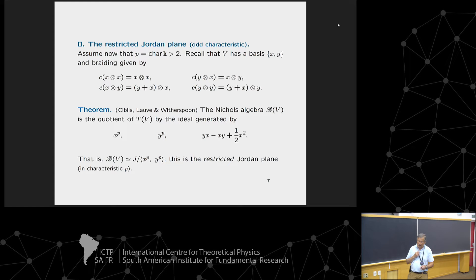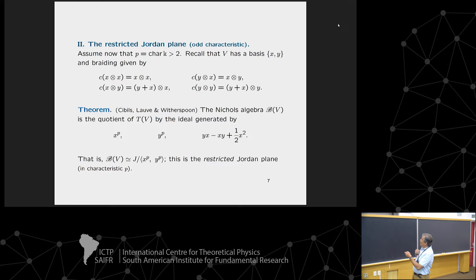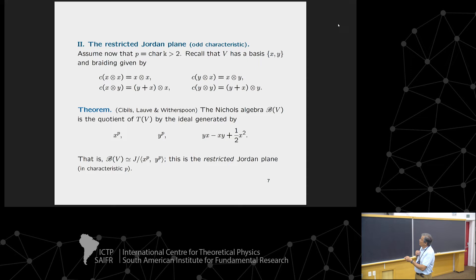Let us start with the Jordan plane in odd characteristic. We want to define the Drinfeld double of the Jordan plane, beginning with the Drinfeld double of the restricted Jordan plane. Assume the characteristic of K is odd. Our V has basis {x, y} with the braiding given by the earlier formulas. Schauenburg, Lowe, and Witherspoon observed that the Nichols algebra B(V) is the quotient of T(V) by the ideal generated by three relations: x^p, y^p, and the Jordan plane relation. In other words, the Nichols algebra of V in characteristic p is the Jordan plane quotiented by these two extra relations. By analogy with the theory of restricted Lie algebras, we call this the restricted Jordan plane in characteristic p.